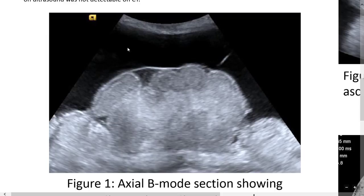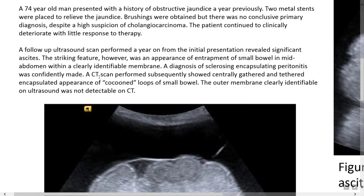Here is Figure 1: a B-mode axial image demonstrating ascites and then this capsule with fluid and small bowel loops within it. A CT scan was subsequently performed, which showed essentially a gathered and tethered encapsulated appearance of cocooned loops of small bowel.